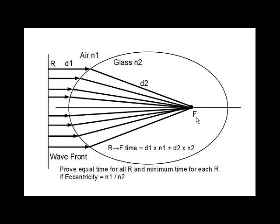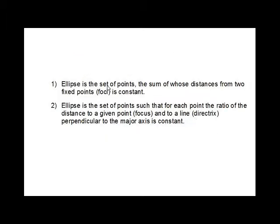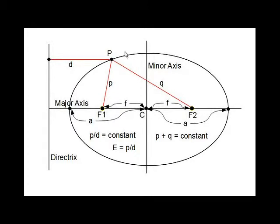We will be using two different but compatible definitions of ellipse. One definition is the set of points the sum of whose distances from two fixed points is constant. This diagram illustrates what this means.